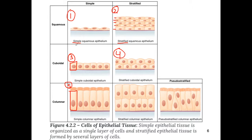Applying this: box one has flat cells one layer thick — simple squamous epithelium. Box two has multiple layers of flat cells — stratified squamous epithelium. Box three has cube-shaped cells one layer thick — simple cuboidal. Box four has two cell layers of cube-shaped cells — stratified cuboidal. Box five has columnar cells one layer thick — simple columnar. Box six has two layers of columnar cells — stratified columnar.